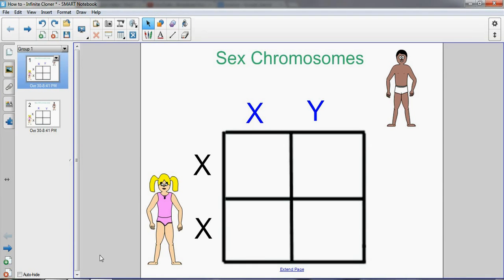Hi there, today I'm going to show you how to clone objects in SmartBoard. This is a lesson I did with my students and it gave them a chance to go up to the SmartBoard, drag and drop chromosomes. It illustrates to them the process that's going on here when it comes to sex determination in humans. Let's jump right into it.